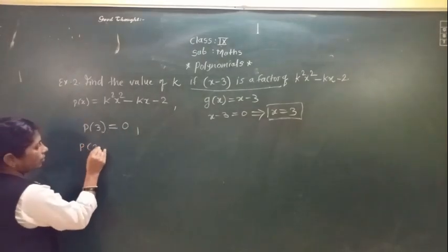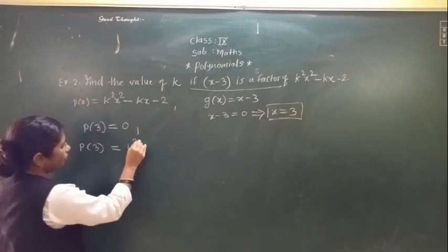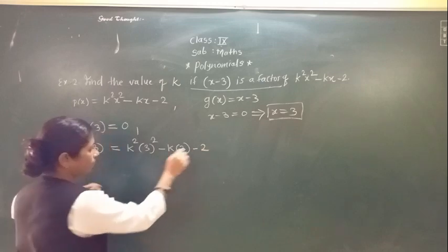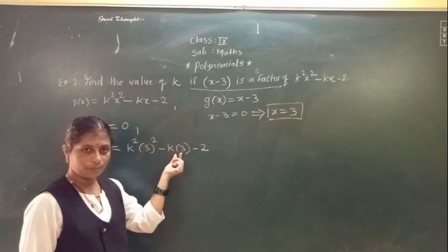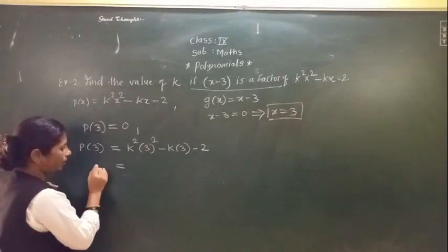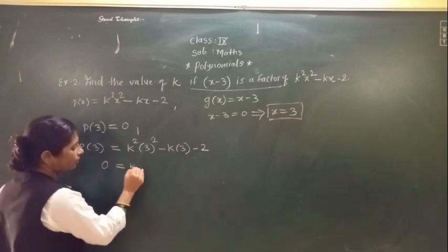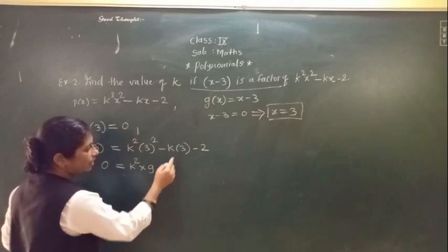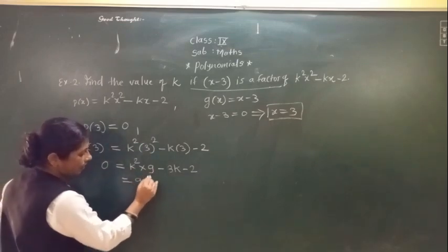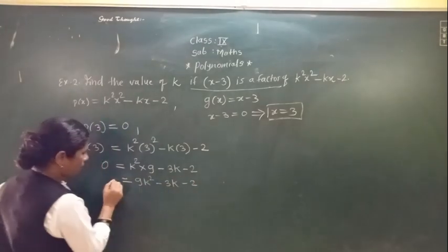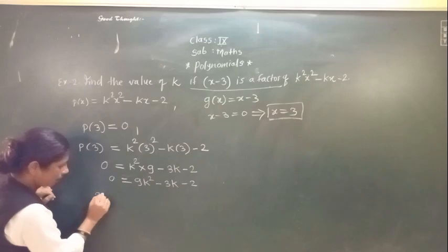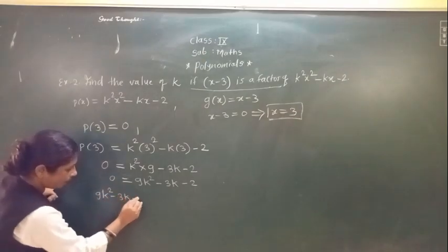So P(3) = k² × 3² − k × 3 − 2 = 0. Here 3² = 9, so we get 9k² − 3k − 2 = 0. We have to find the value of k, and we have obtained a quadratic equation, so we will solve it by the splitting middle term method.